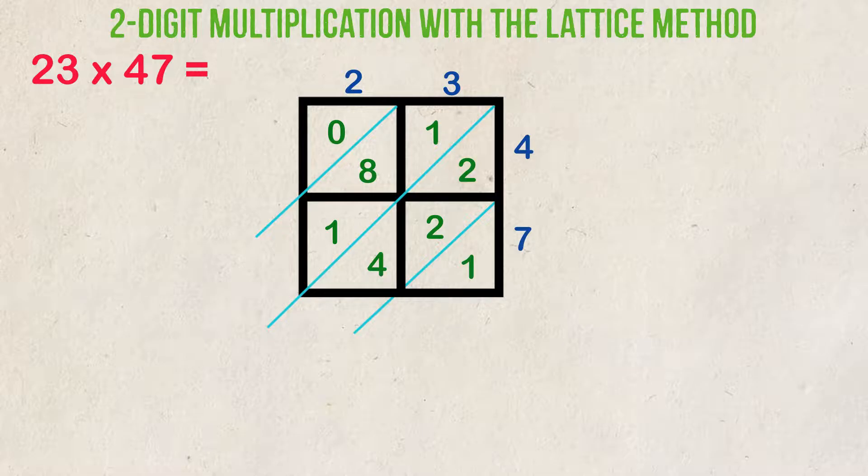Now we've gone through all of our multiplication steps. The final step is to add up our results. But instead of adding columns like you would with traditional multiplication, we're going to add diagonally. So the first diagonal, starting from the right, is just going to be 1.